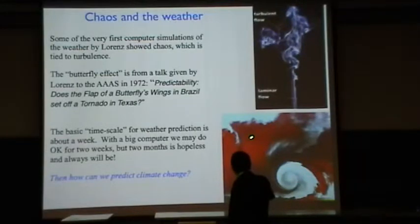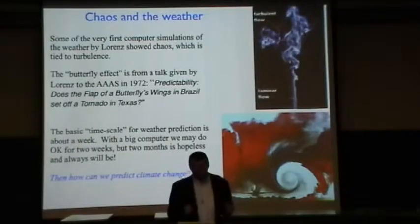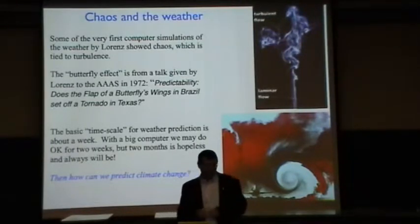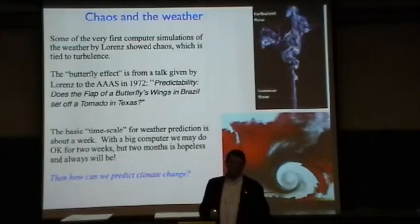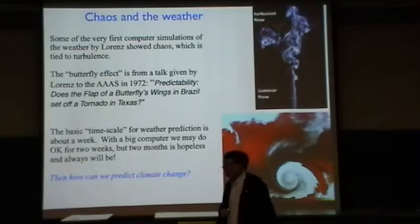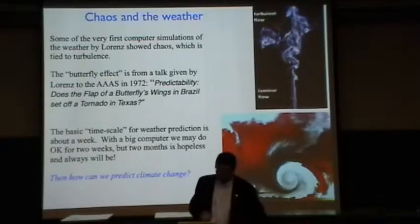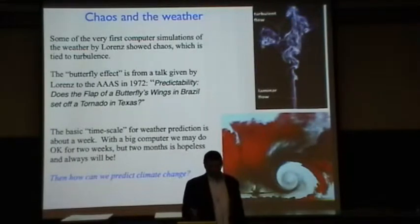So the basic time scale for simulating weather, to predict the weather, is about a week. What that means is that if we throw a bigger computer at it, if we work harder, we may be able to simulate the weather for two weeks. But two months is hopeless, and it always will be. That's a fundamental limitation.